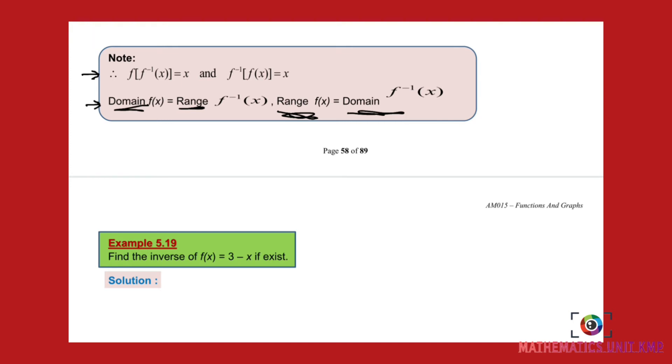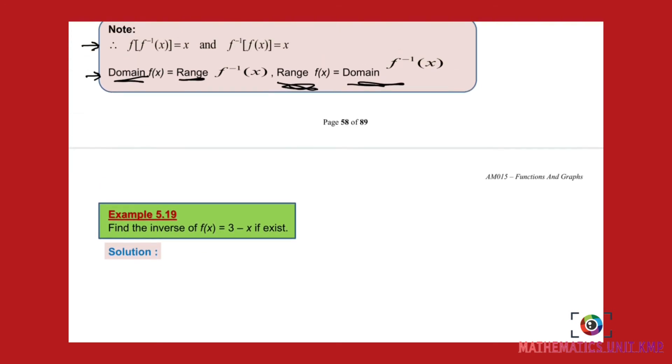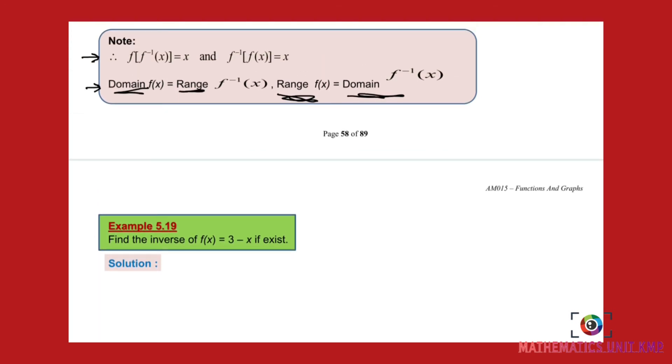Okay, we go to example 5.19. Find the inverse of f(x) equals 3 minus x if it exists. So the first step to find the inverse of a function is you write back the property that you have learned. You need to remember this property and understand. f(f inverse x) should get x.